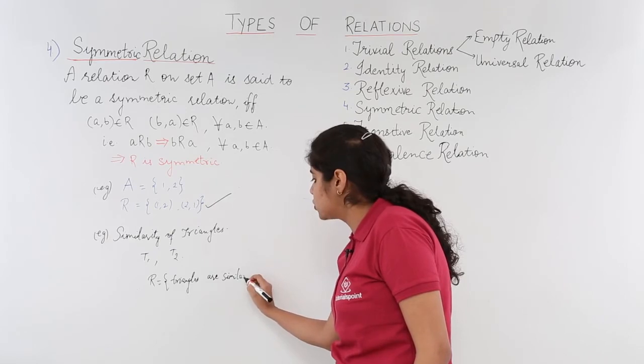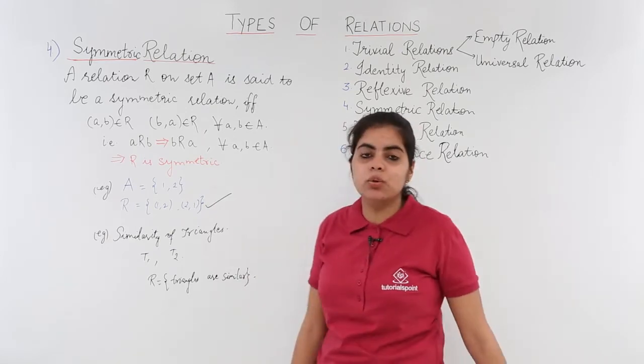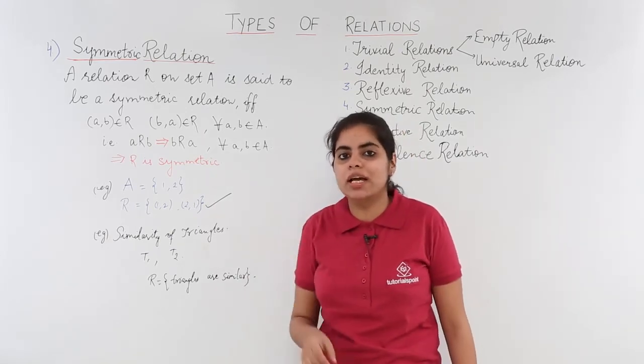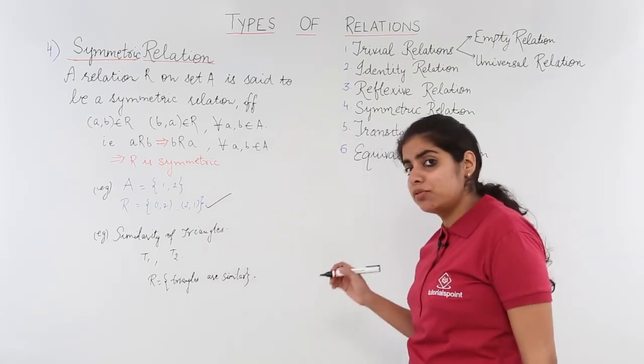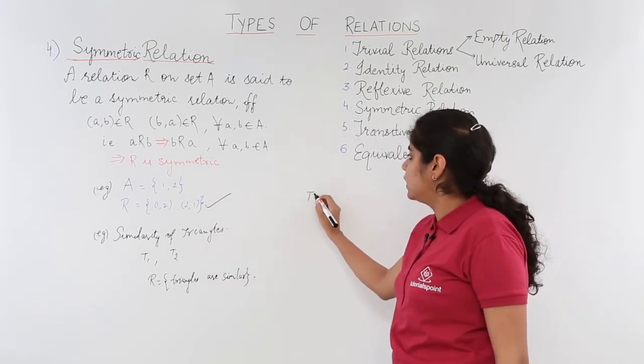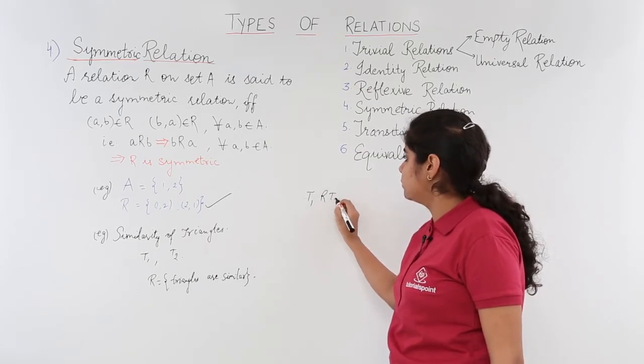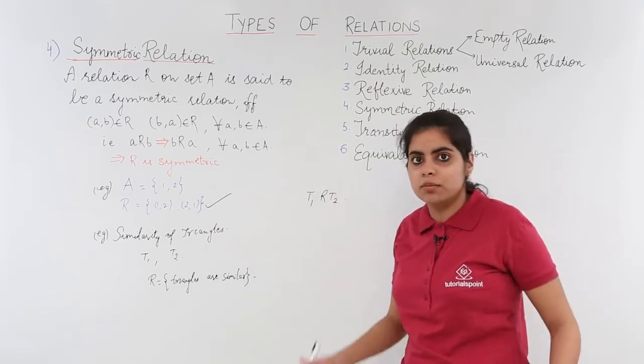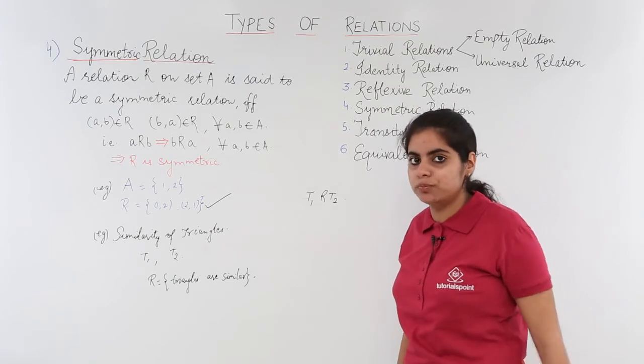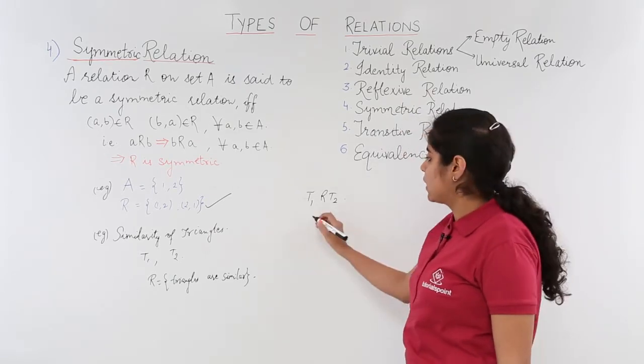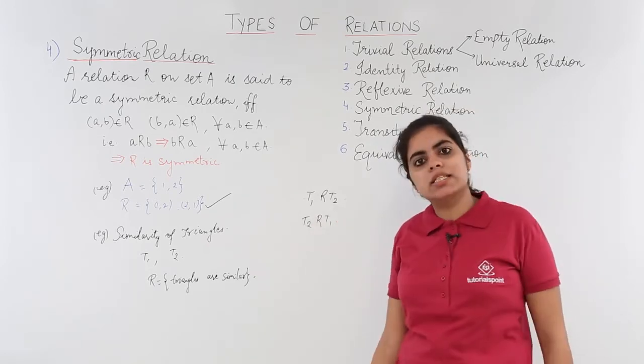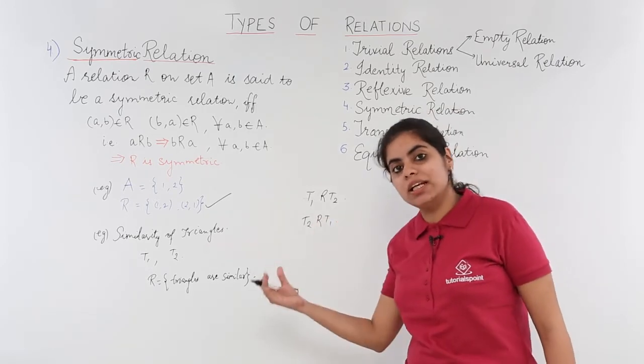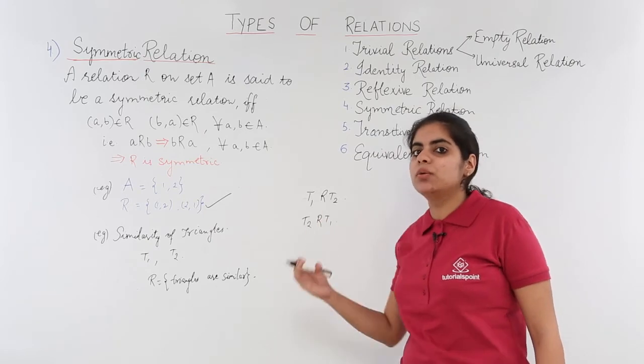Now for this relationship what do we know? We know that if any two triangles T1 and T2 are taken, can we say that for symmetric purpose T1 is related to T2? Yes, because T1 is similar to T2. Now can we say also that T2 is related to T1? Yes, because T2 is similar to T1.